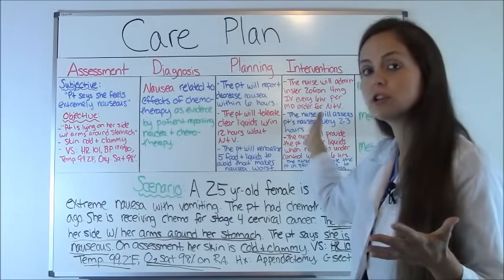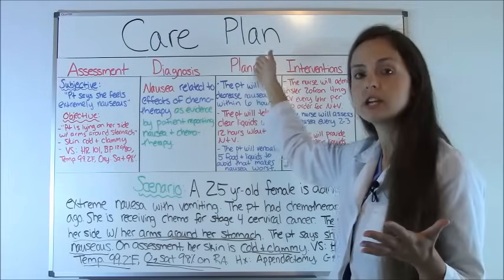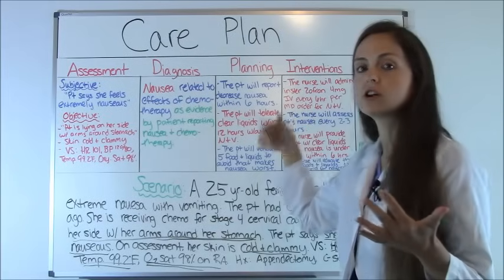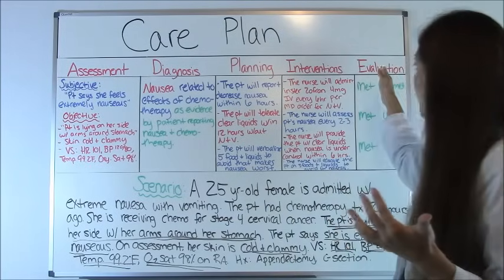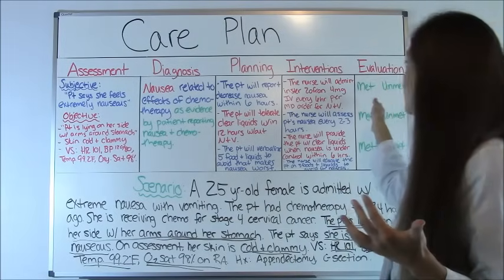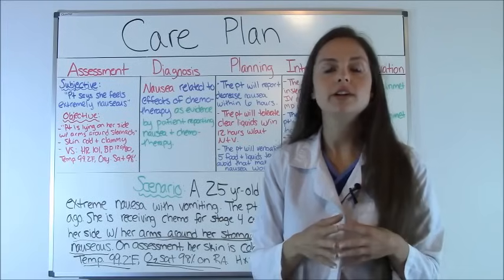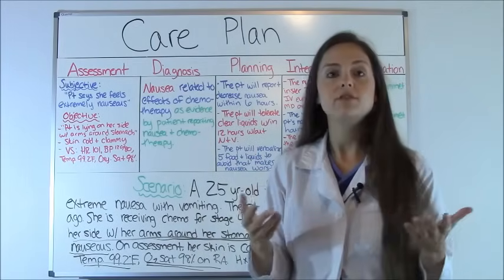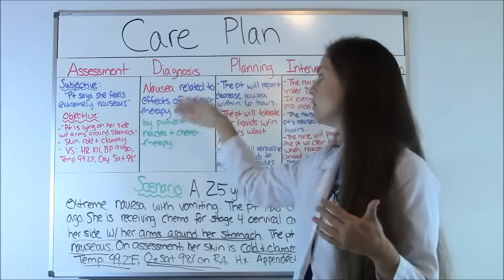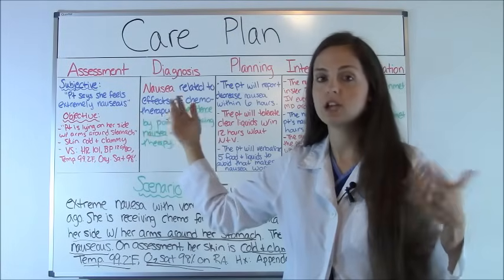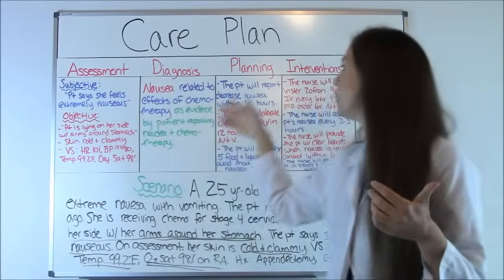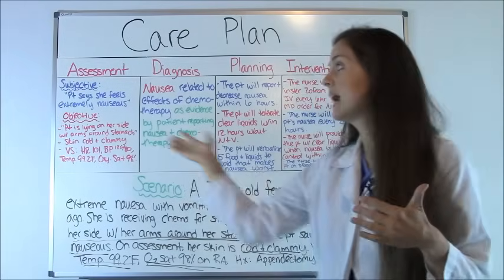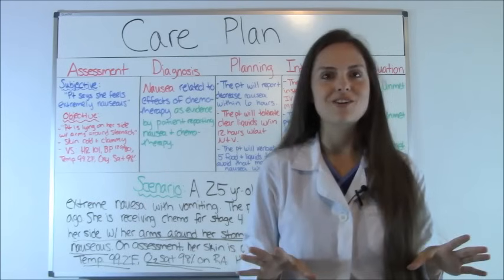Step five is nursing interventions — what you're going to do in order to get the patient to meet their goals. They're very patient-oriented and nurse-specific. Step six is evaluation: you're going to evaluate how the patient is meeting those goals, and if not, you're going to redo your diagnosis because the patient's changed, or redo your nursing interventions. So that is how a nursing care plan is laid out.